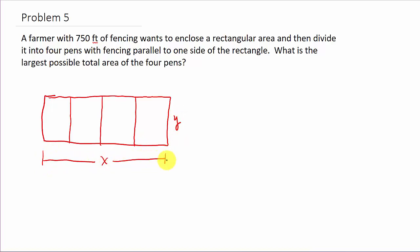Alright, so we'll label this y and then we'll label this side here x. So let's write down the information they give us and then let's write down the function that we want to, in this case, maximize because we want to know what is the largest possible total area of the four pens.